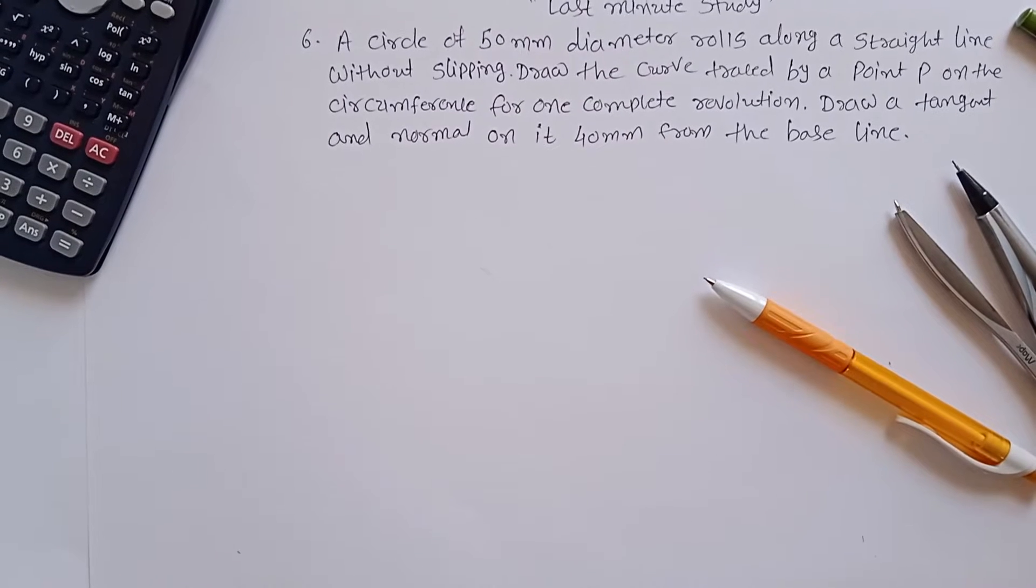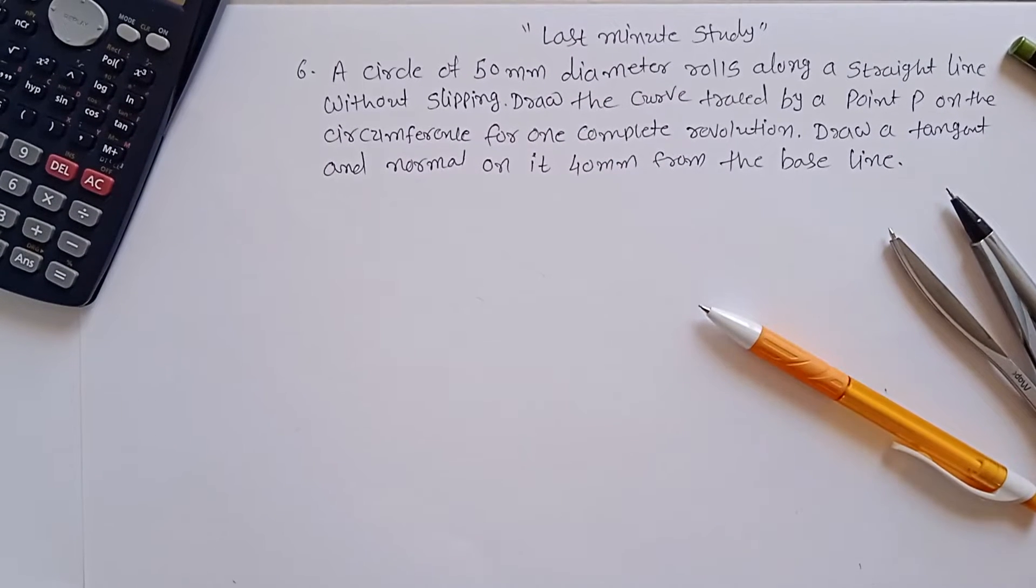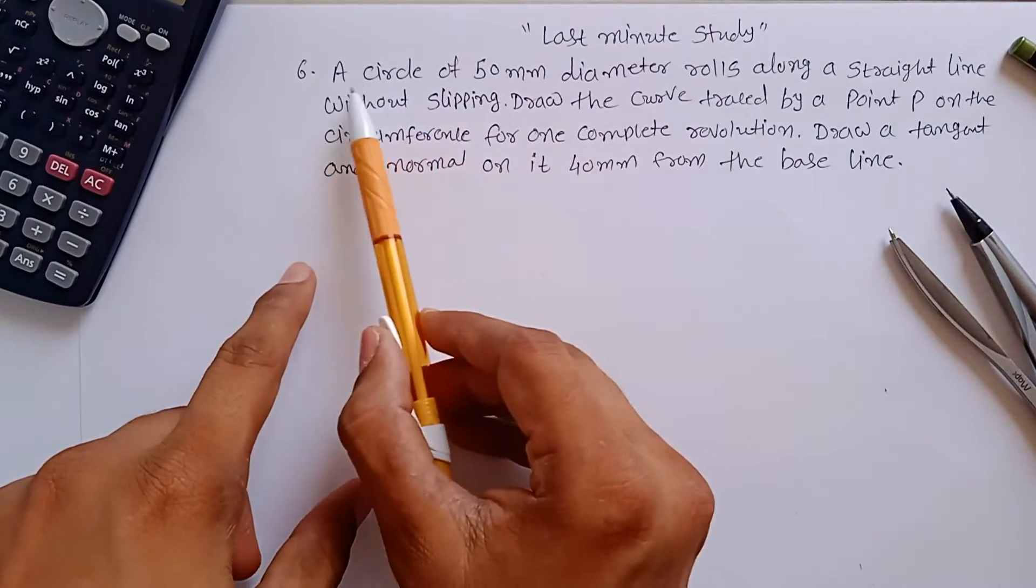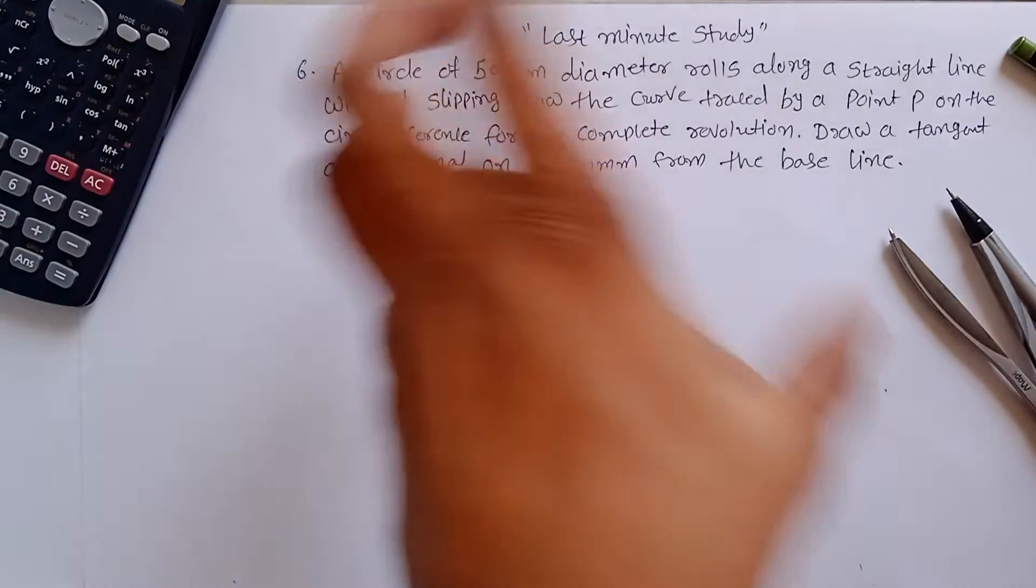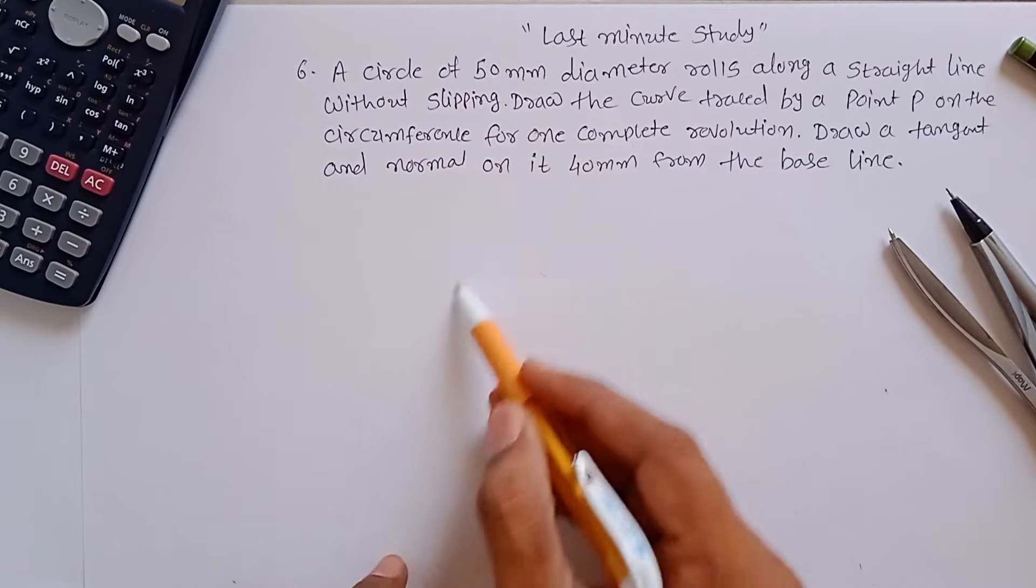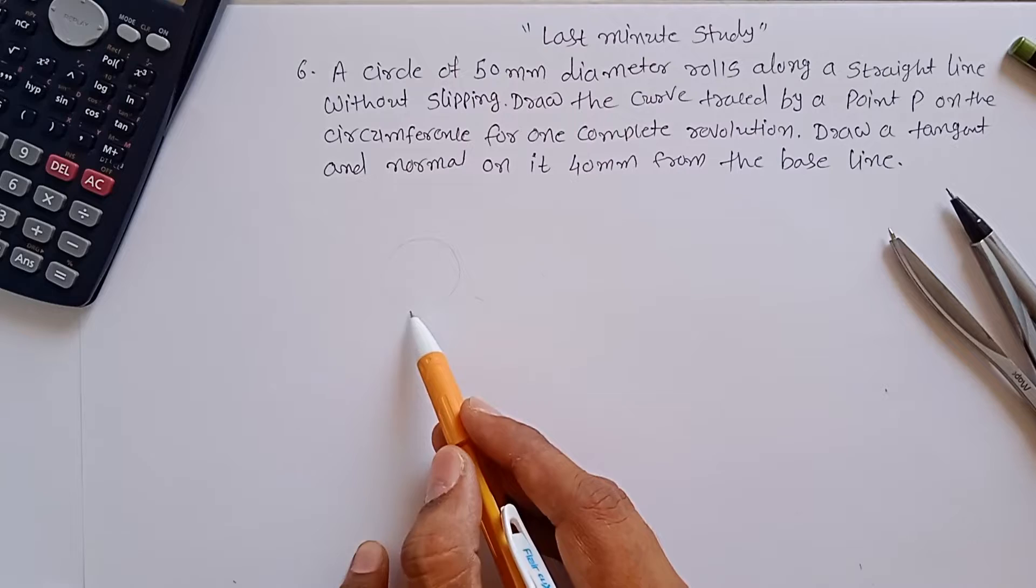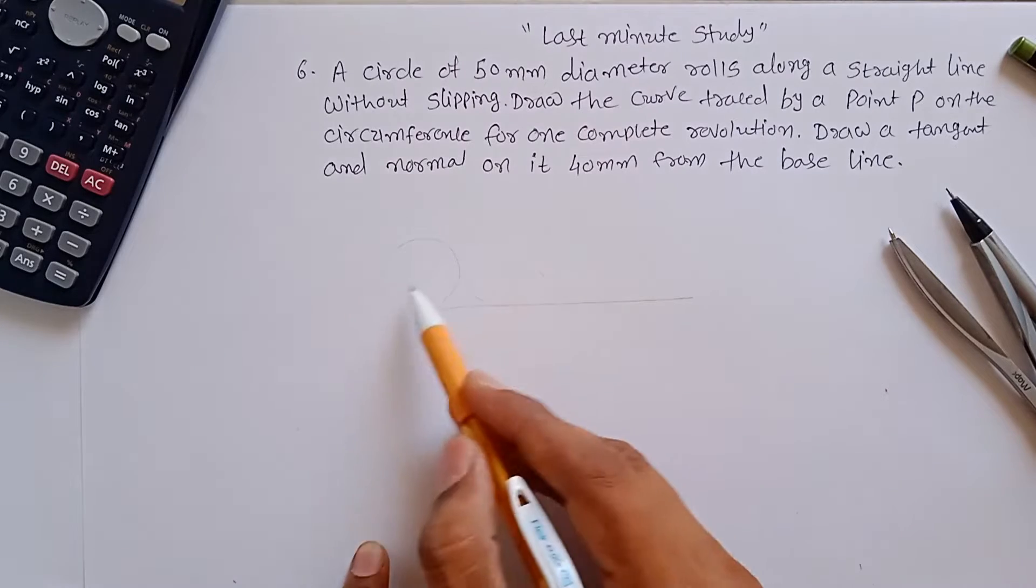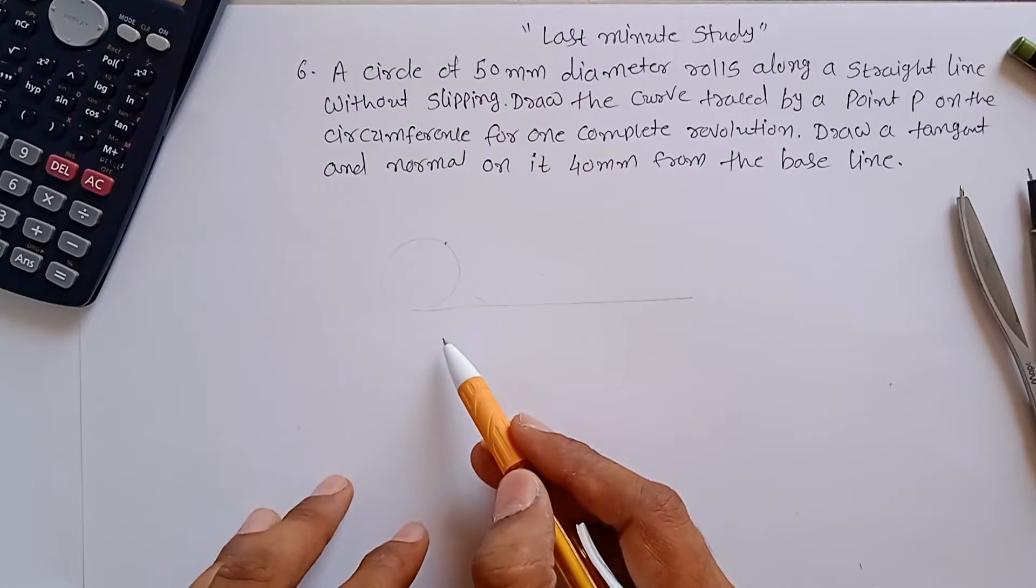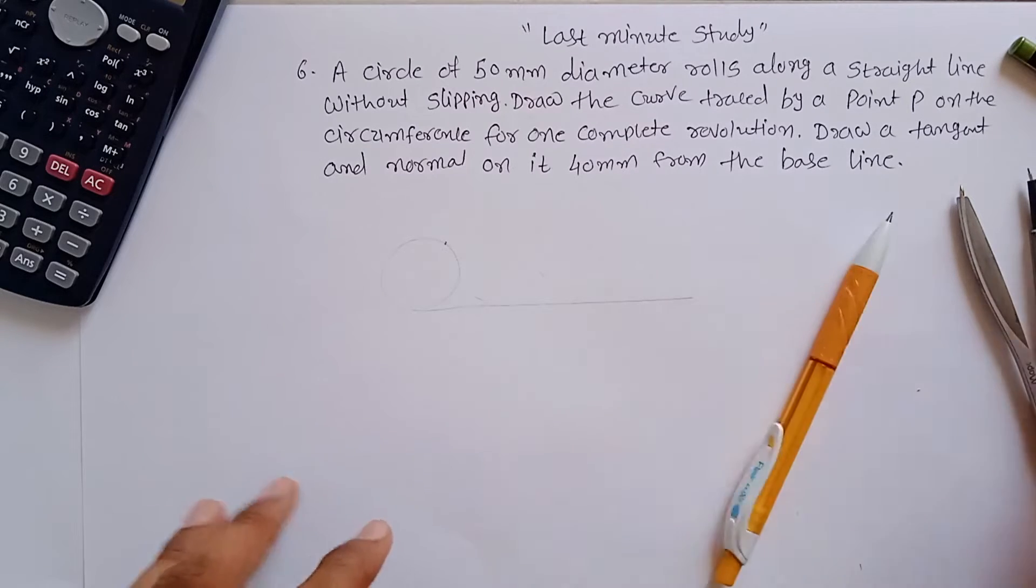Problem number 6 from sheet name engineering course, in which you have to construct cycloid by using cycloidal method. They have not mentioned the name of cycloid. You have to understand: the circle of 50mm diameter rolls along a straight line. A circle rolls on this straight line, and point P is on the circumference of that circle, and you have to trace the path of it.